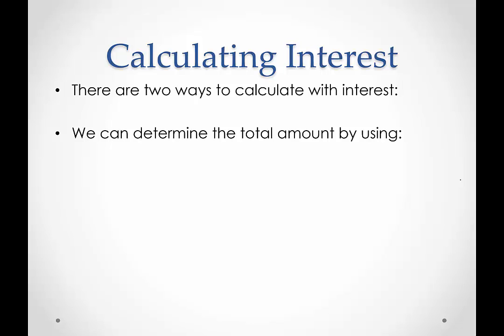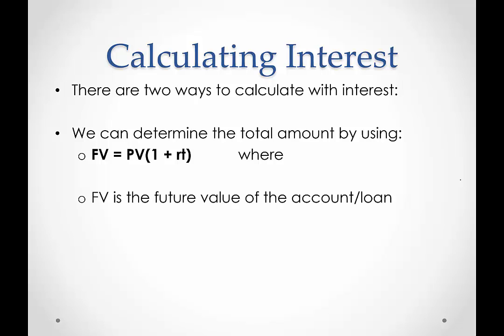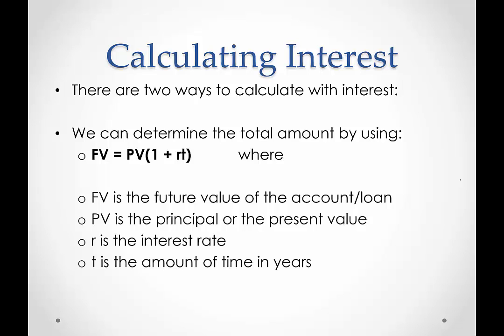We can determine the total amount, that is the future value or the amount in the account, by using FV = PV(1 + rt), where R is the interest rate and t is the amount of time in years. So this would be the future value. So in my example from before, 500 was the present value and 600 was the future value.